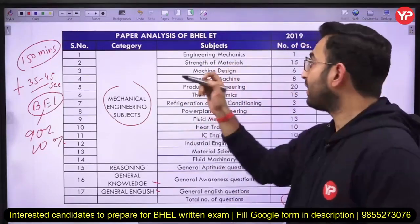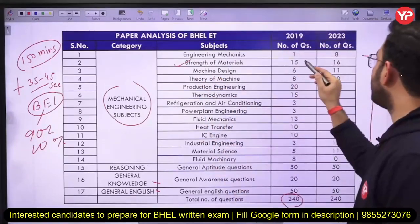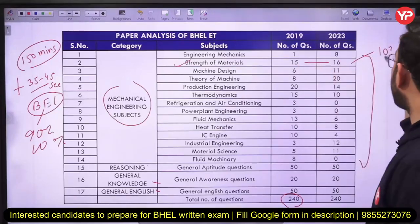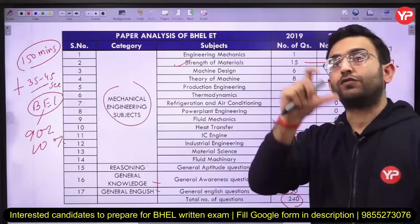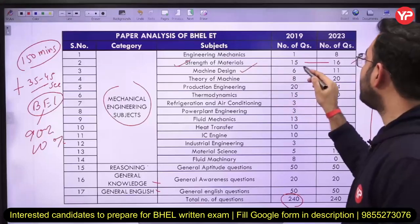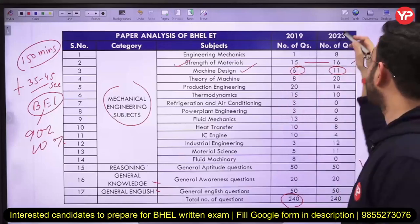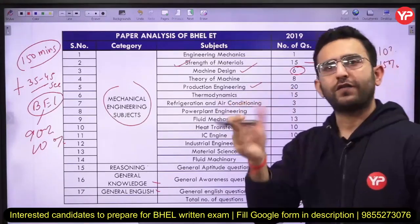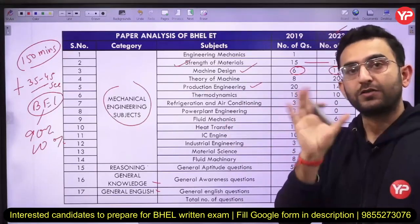Specifically for this exam, strength of materials is a very important subject — you can expect around 10 to 15% weightage, as 15 to 16 questions have been asked out of 120 in both years. Similarly, for machine design, a very large number of questions were asked, particularly in 2023. Production engineering is always a favorite subject for the examiner, and a lot of questions have been asked from this subject.